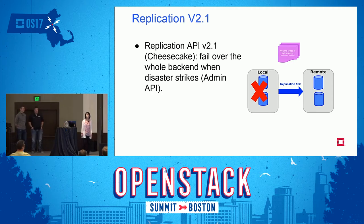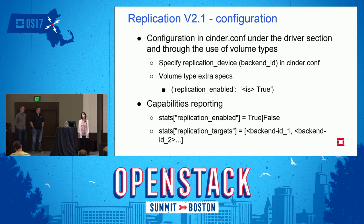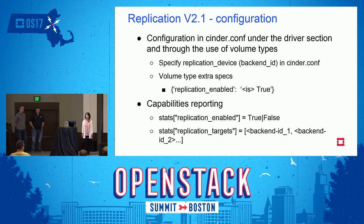Replication API version 2.1 was introduced in Mitaka to solve one particular problem: if the storage backend is hit by a disaster, it provides a way for the admin to fail over the entire backend and prevent data loss. Admins need to make configuration changes in cinder.conf and create a volume type to support replication. In cinder.conf there is a 'replication_device' option; 'backend_id' is a required key and there can be one or more replication targets. Drivers also need to report replication enabled and a list of replication targets.